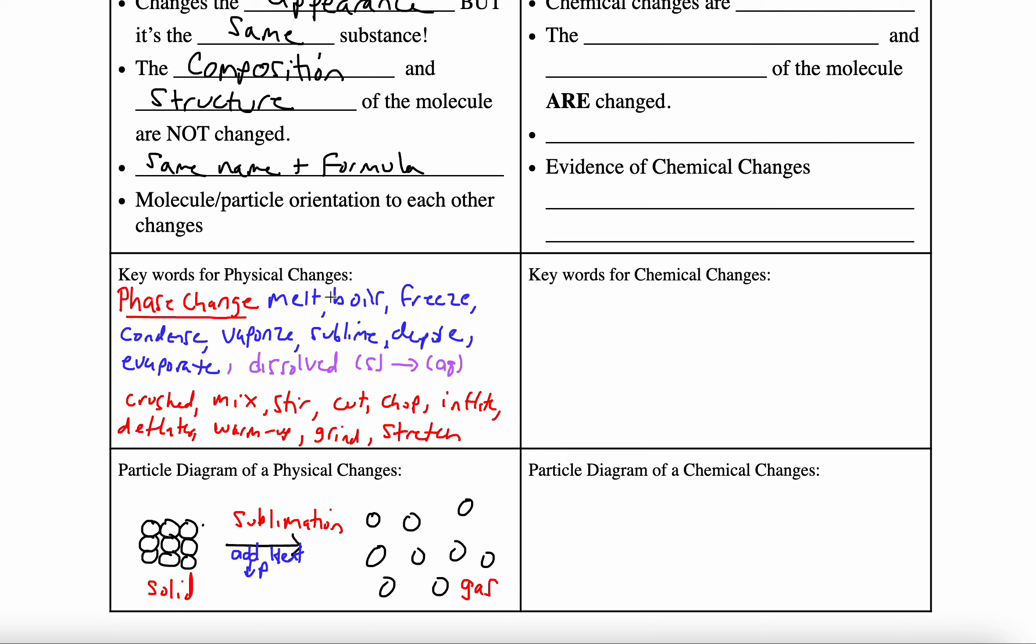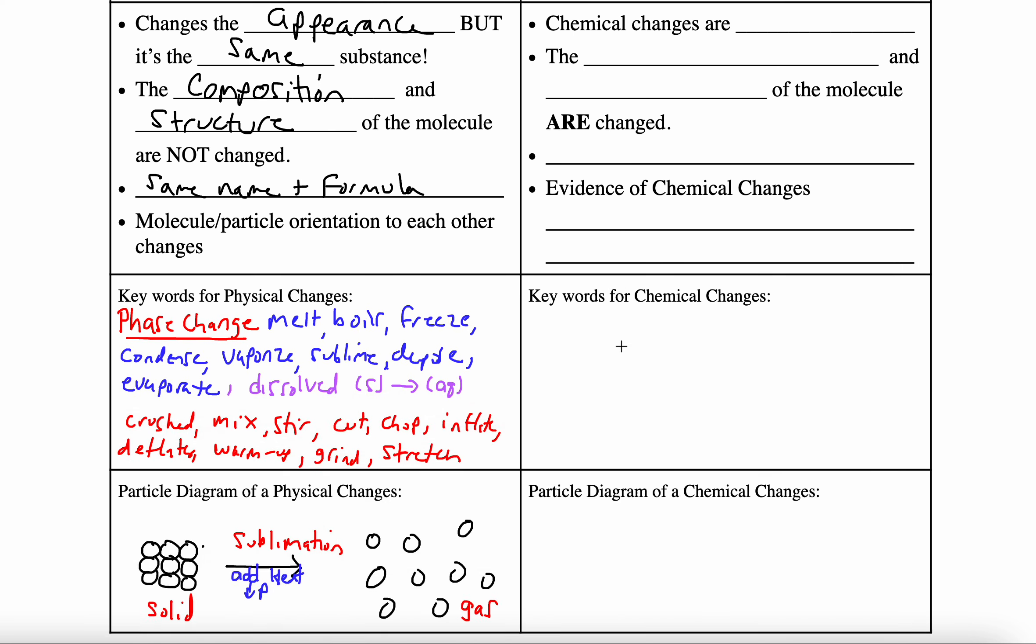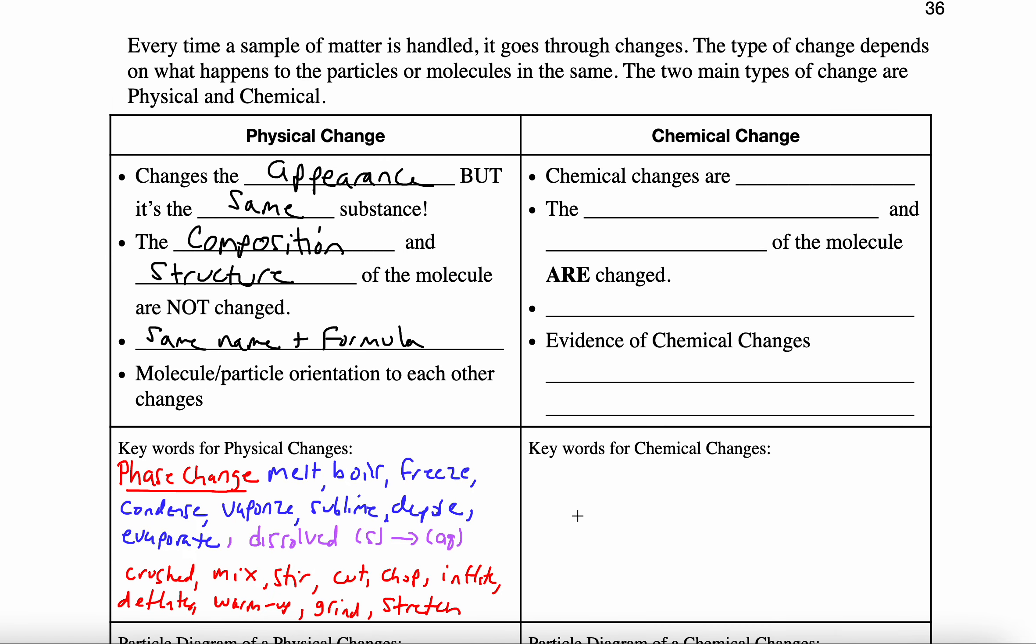On to chemical change. Chemical changes are simply chemical reactions. It means that a reaction has happened, and as a result of the reaction, the composition - which I'm going to put here referring to the atom ratio - and the structure, how those atoms are bonded or linked together, are changed.